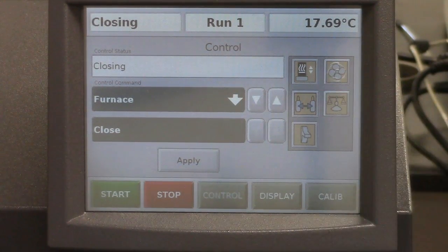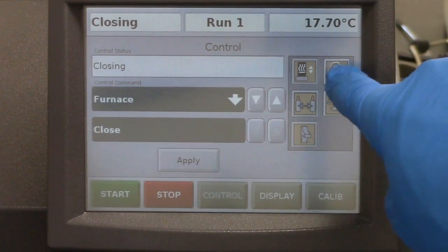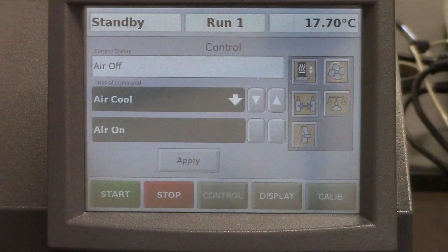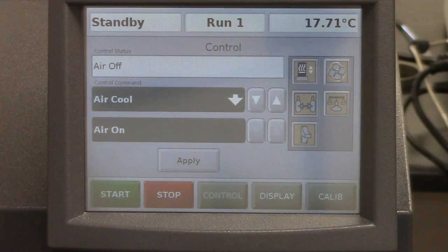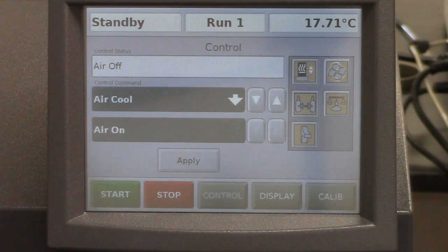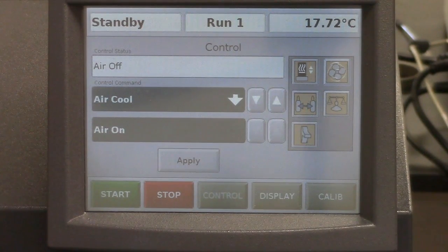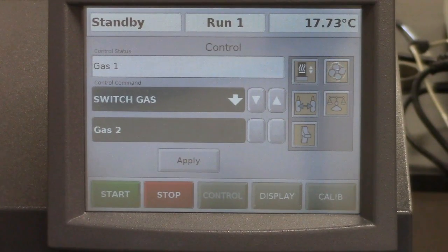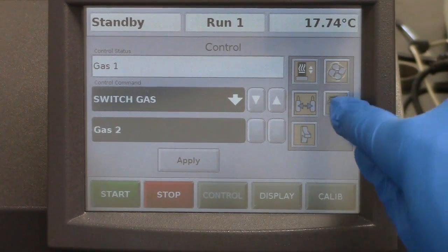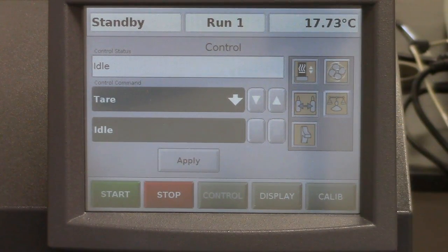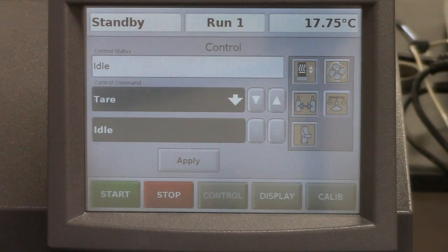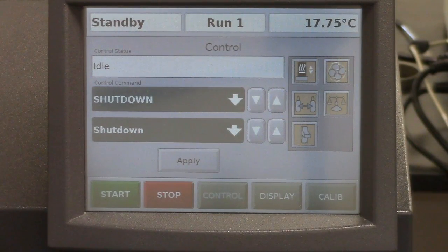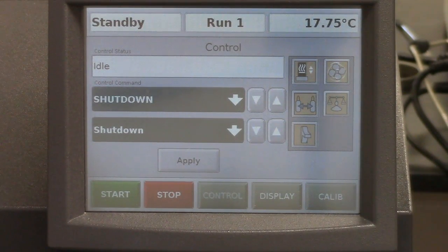There are several different options here on this menu. This one turns the air on or off, and we do want the air on after the TGA is done running to rapidly cool our sample. This one switches the gases. You don't need to mess with that. This one has to do with the balance. You also don't need to mess with that. And this is the shutdown switch when we're finished using the TGA.